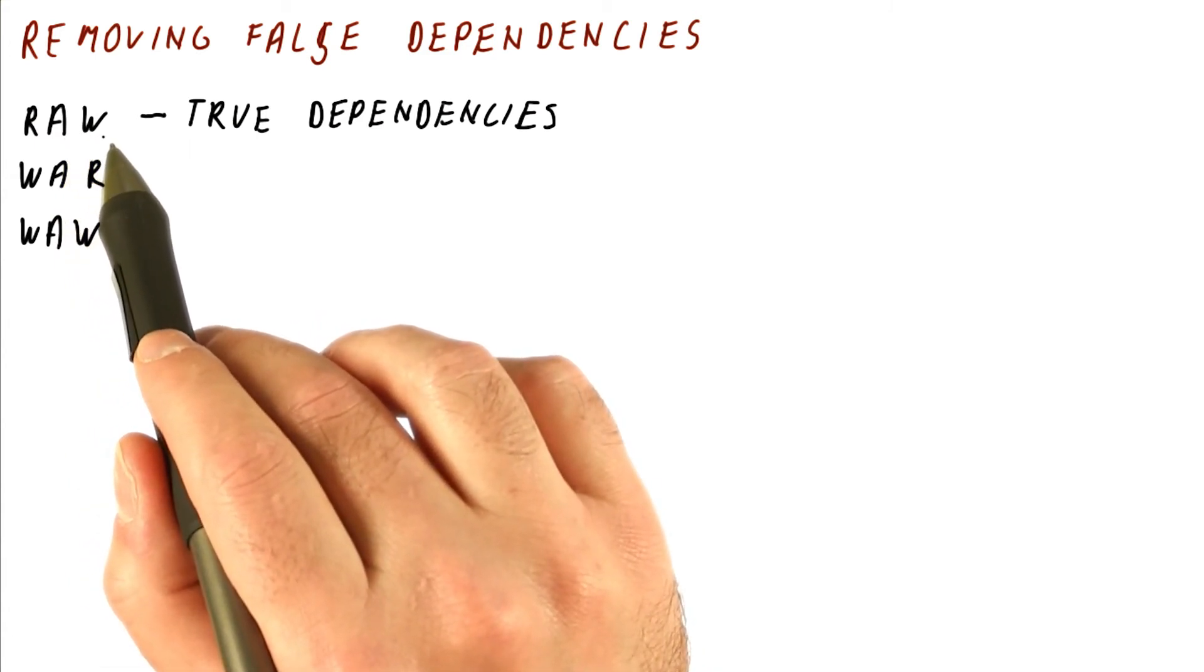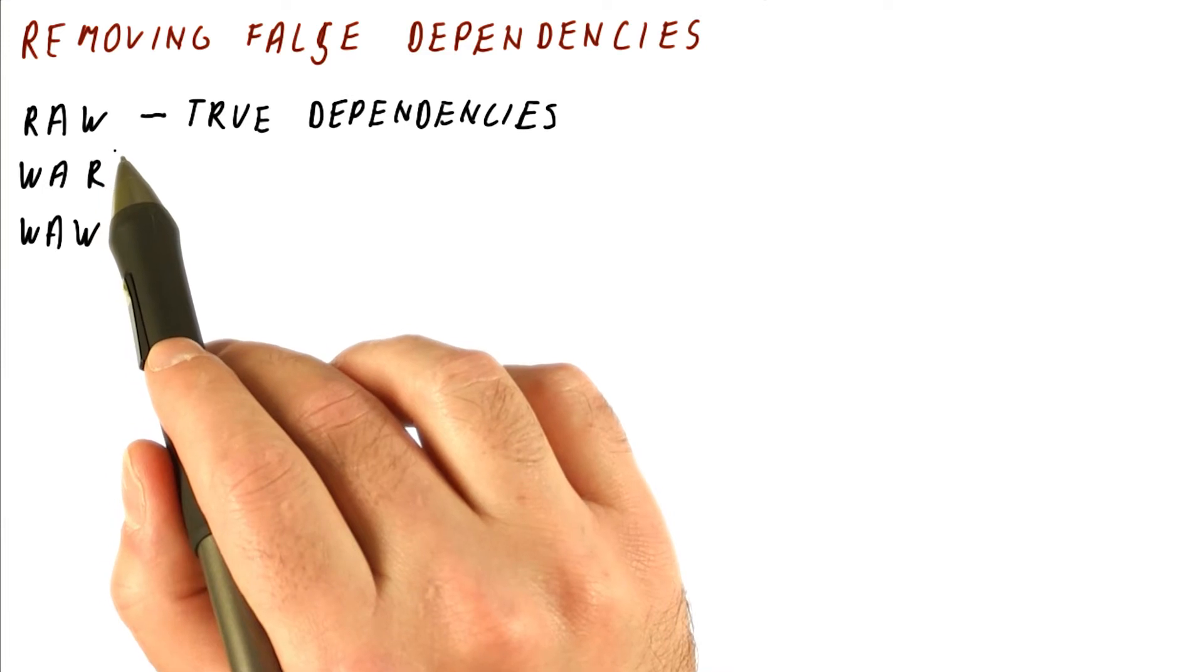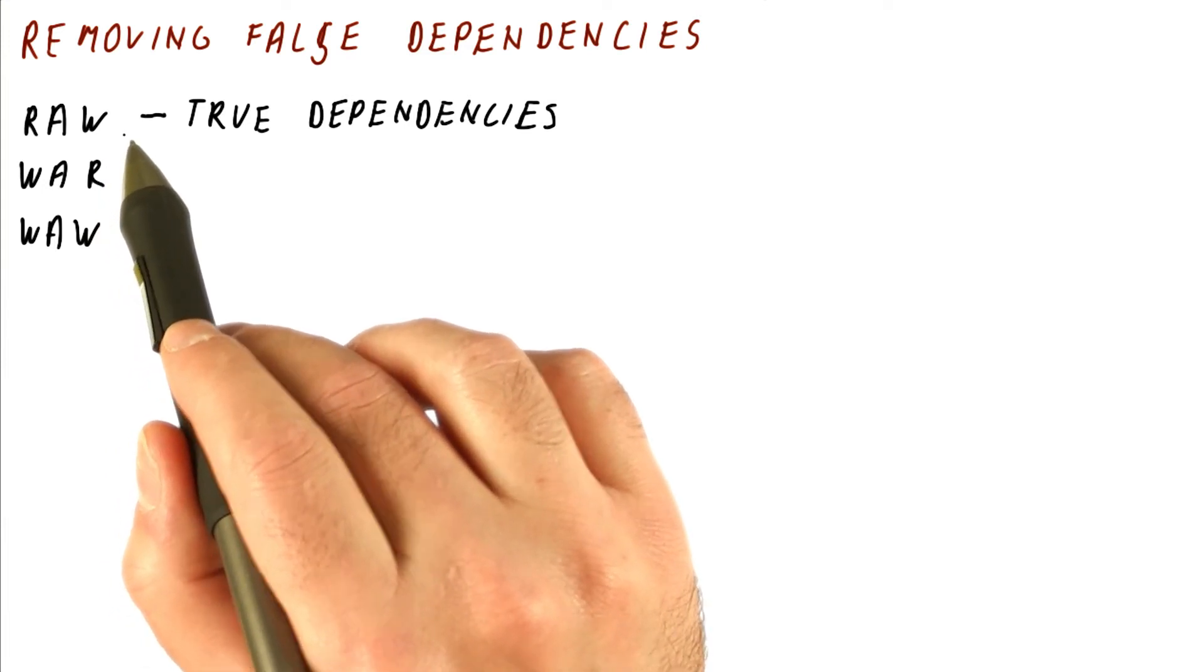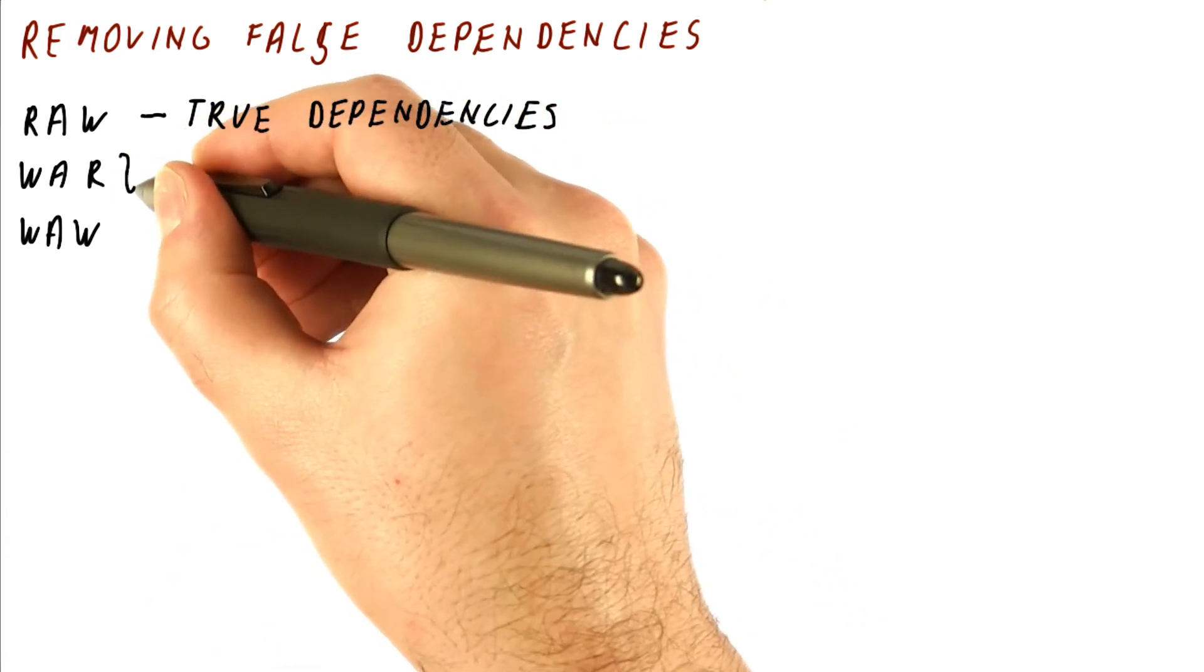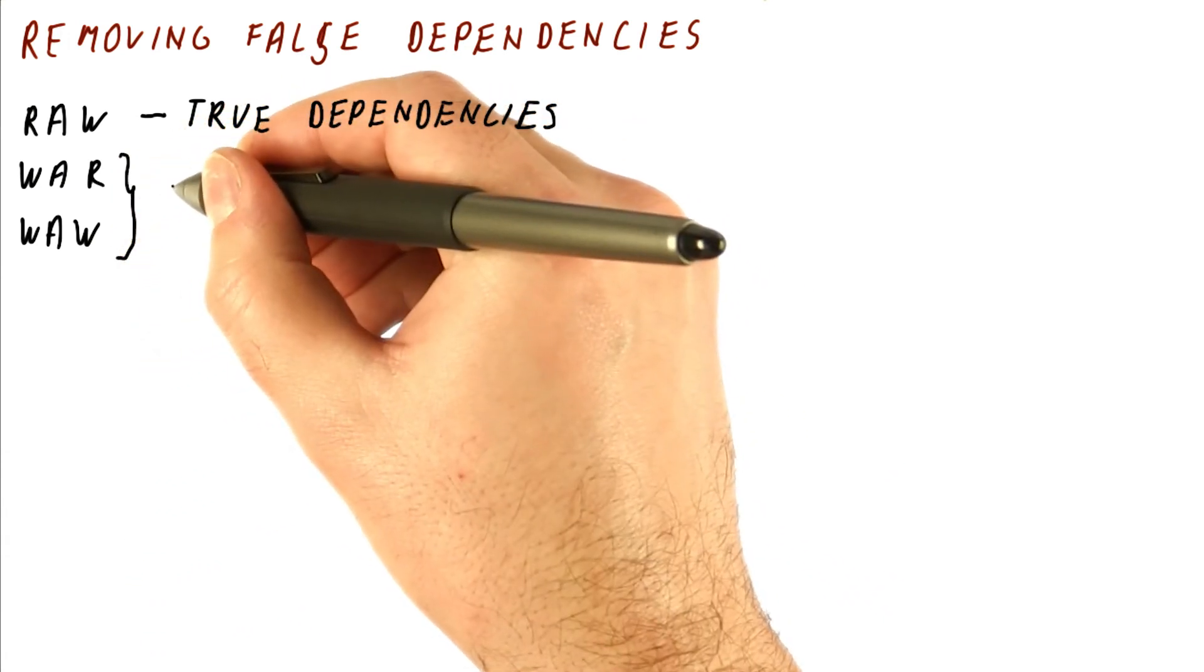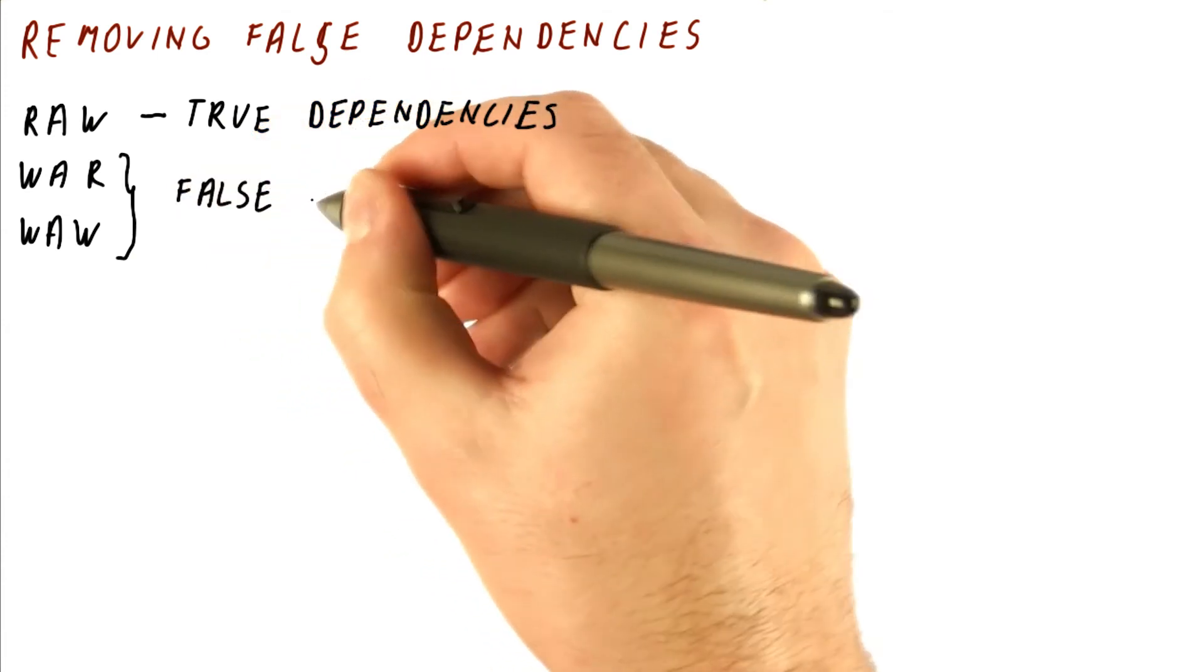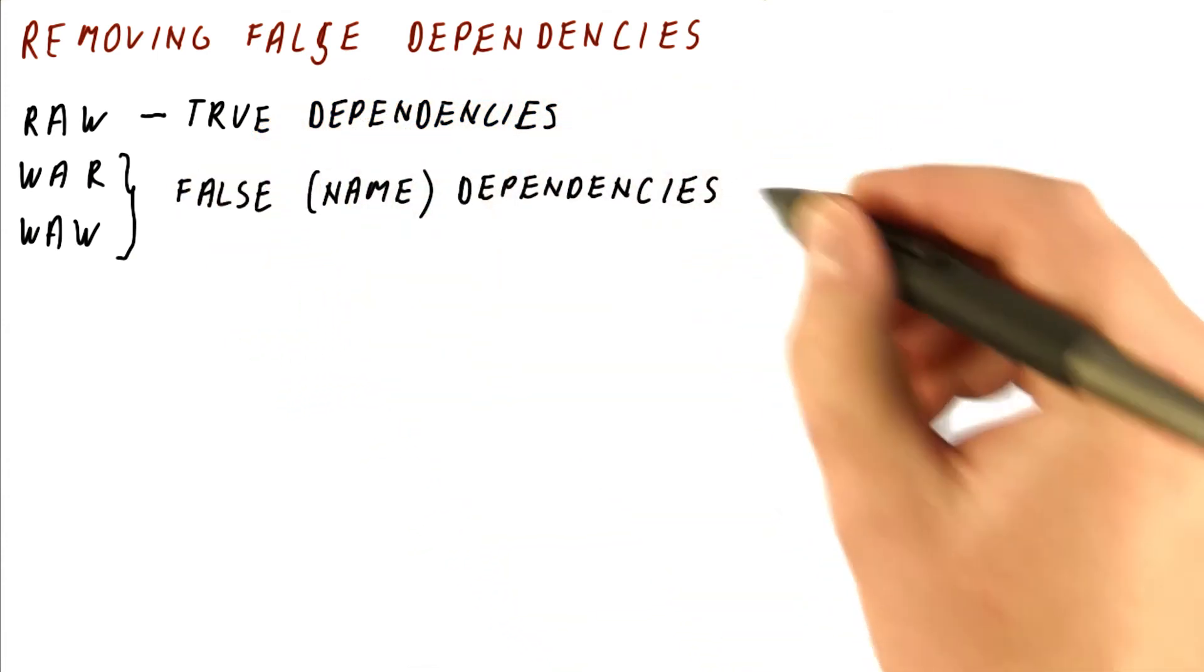Some instructions produce values that are then used by other instructions and so on. So the instructions that use values really depend on instructions that previously wrote the results. In contrast, these are called false or name dependencies.